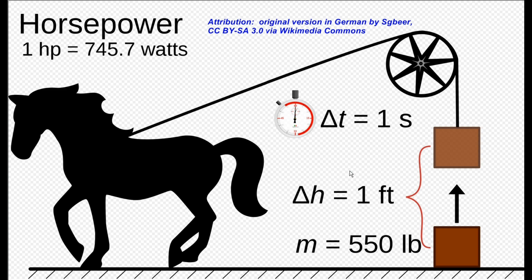We'll start with a bit of a history lesson. Where did the term horsepower come from? It started back in the late 1700s as the steam engine was starting to replace horses in some applications, and they needed a way to compare how powerful a steam engine was — how many horses it could replace.